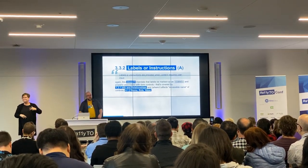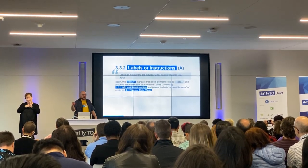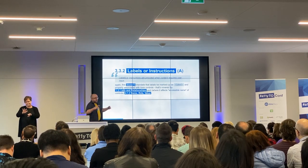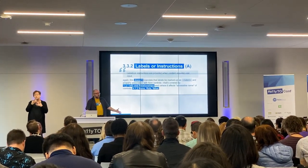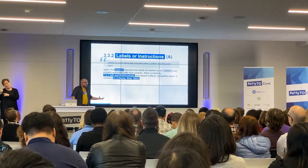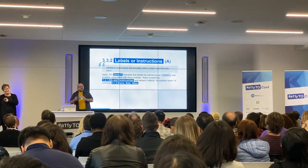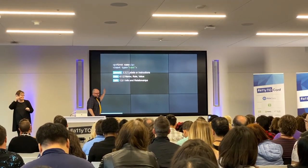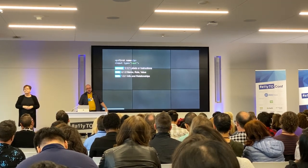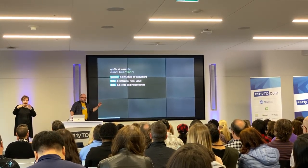Similarly, 3.3.2 Labels or Instructions: 'Labels or instructions are provided when content requires user input.' Again, it doesn't mandate that labels be marked up with a correct label element in HTML or properly associated with a form control. That's the job of 1.3.1 and, where it affects the accessible name of the form control, 4.1.2. So it's about being precise and specific about which SC something actually fails. If you have a paragraph saying 'first name' followed by an input, that passes 3.3.2 — there is something there that acts as a label. It fails 4.1.2 and 1.3.1, but passes 3.3.2.